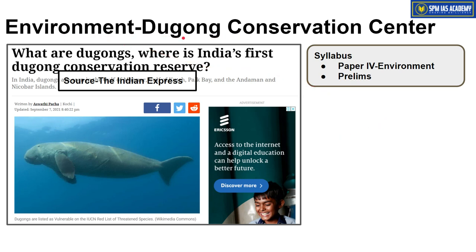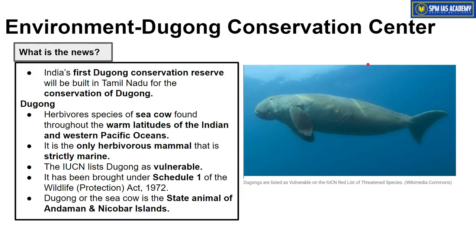The next article is taken from the environment segment — it is about the Dugong Conservation Center. This topic is important from our syllabus Paper 4, environment point of view. India's first Dugong Conservation Center has been opened in the state of Tamil Nadu. A Dugong is a marine animal also called a sea cow because it looks somewhat like a cow. This Dugong is found in the warm latitudes of India and the western Pacific Ocean. It is completely herbivorous and is the only strictly marine herbivorous mammal.